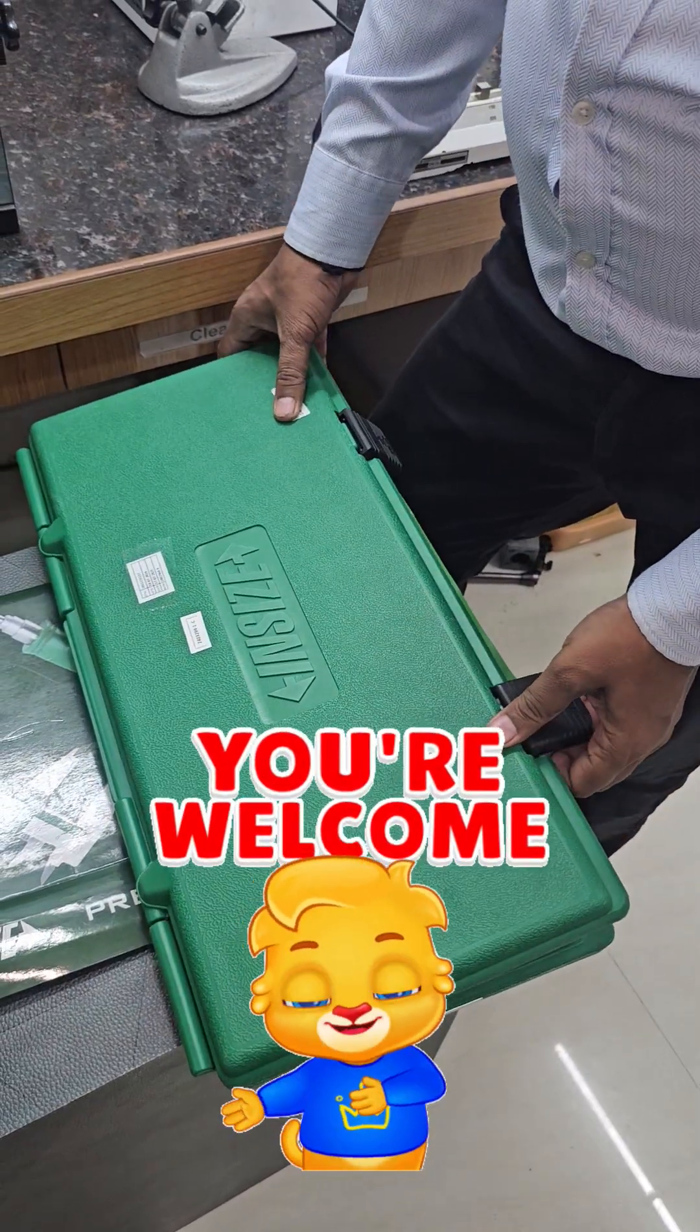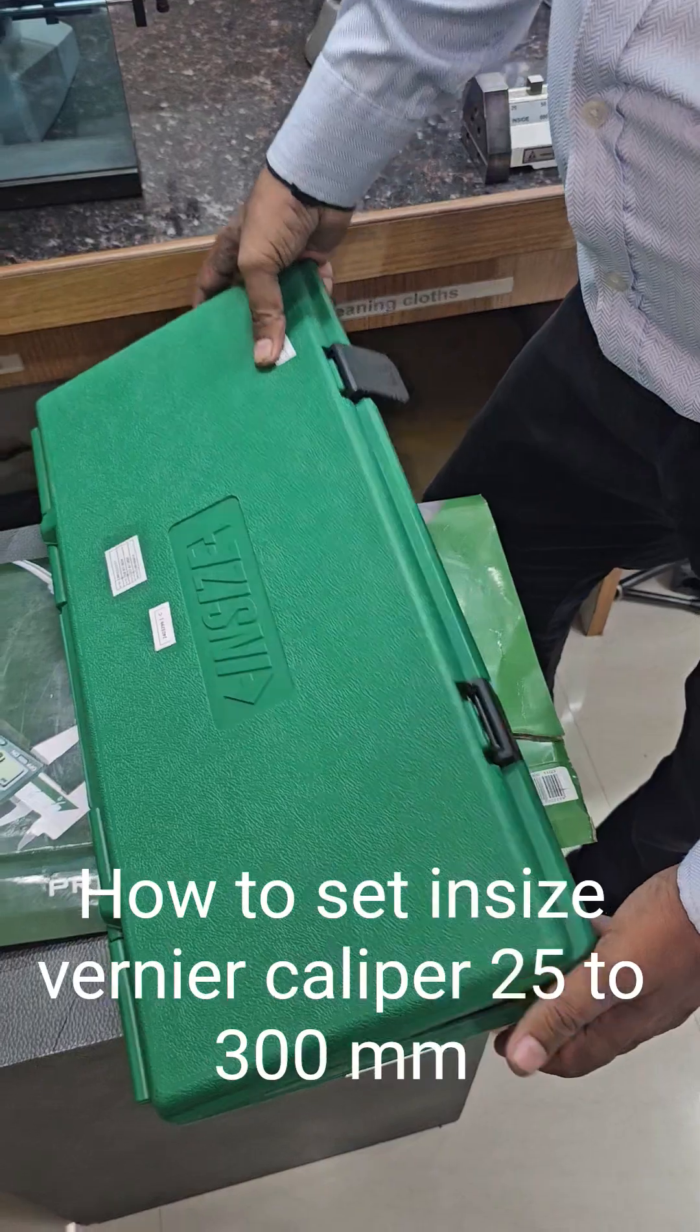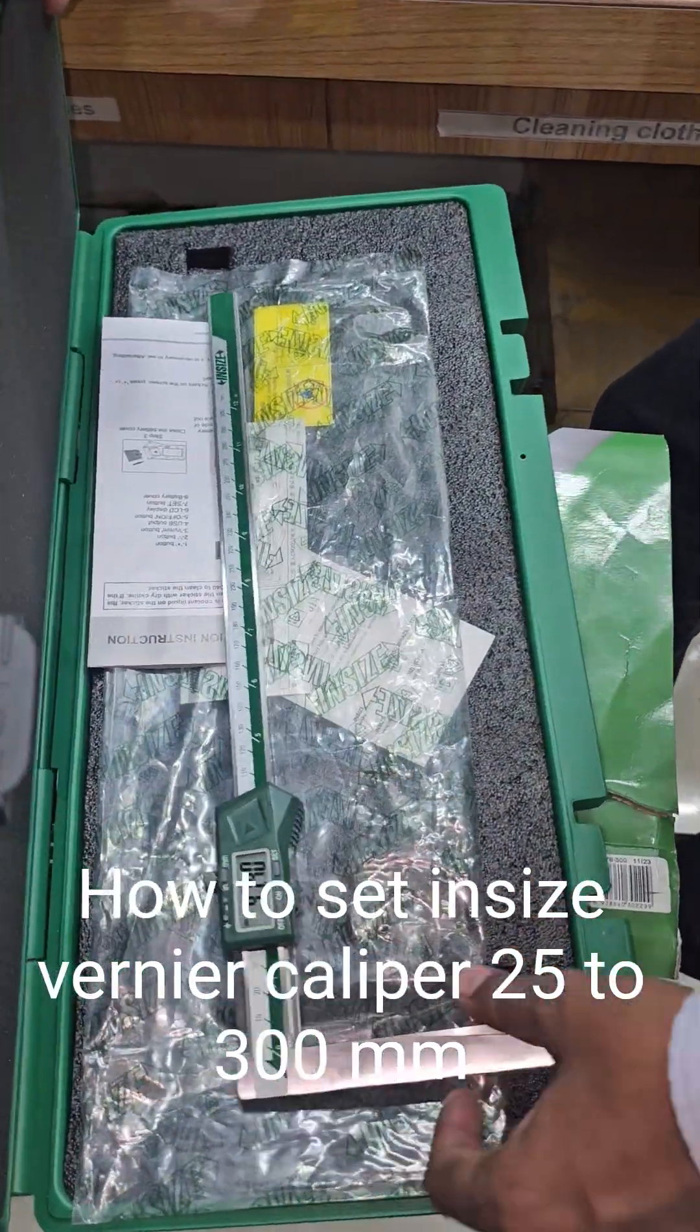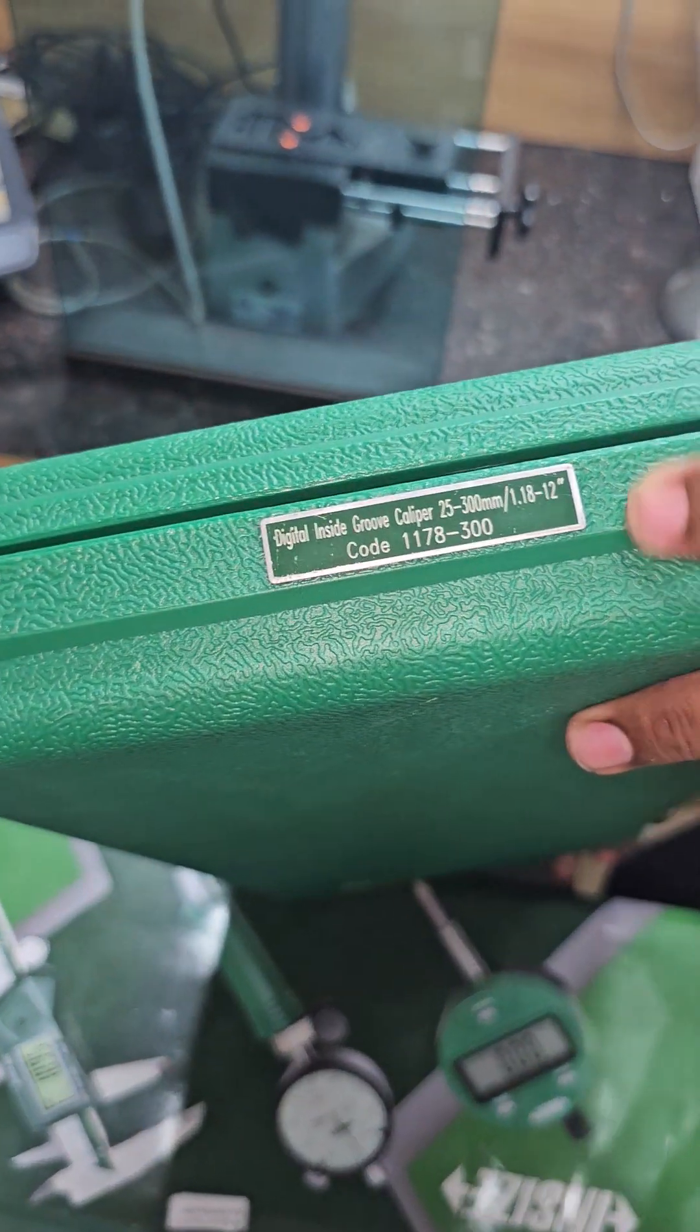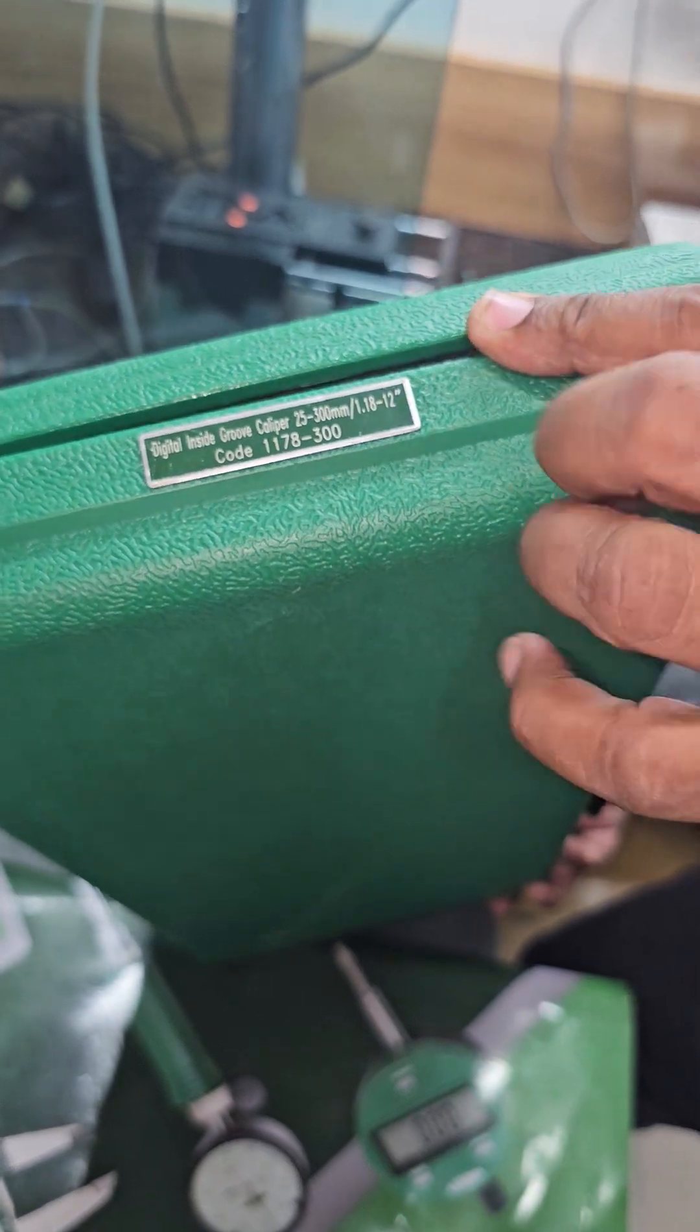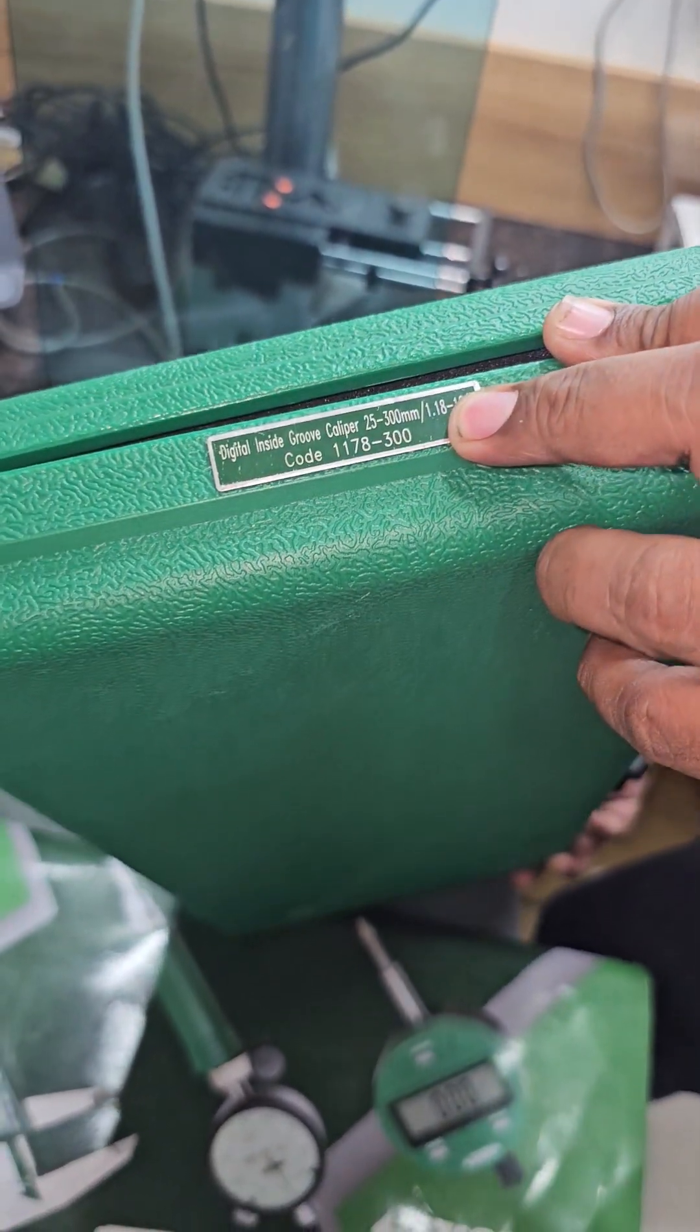Hi friends, welcome again. Today I will show you inside groove caliper model number 1178-300. Inside groove caliper size is 25 to 300mm.